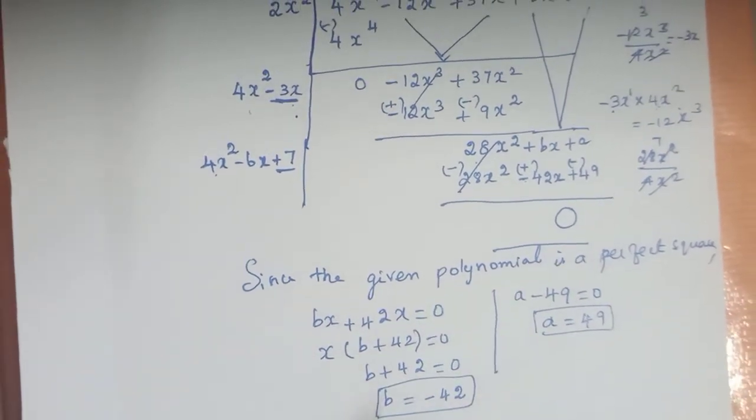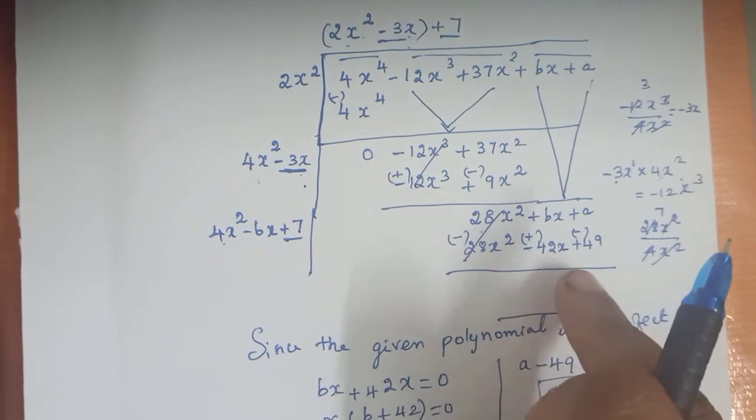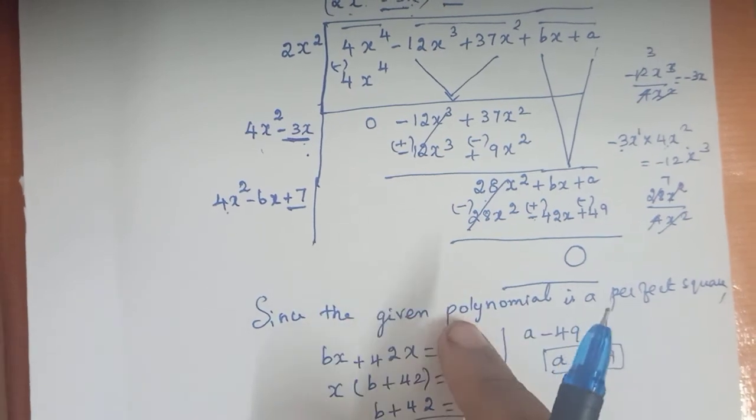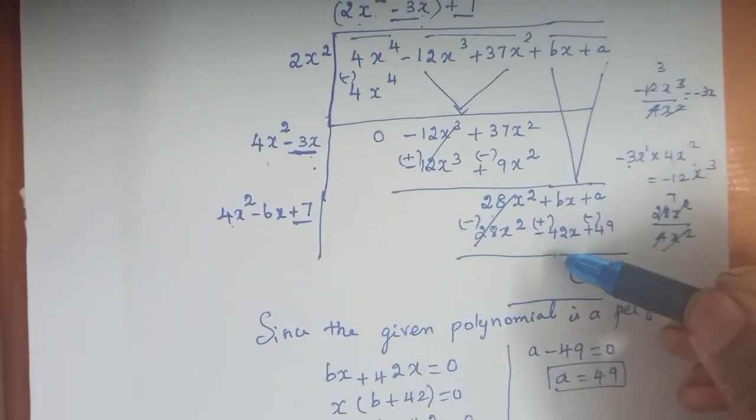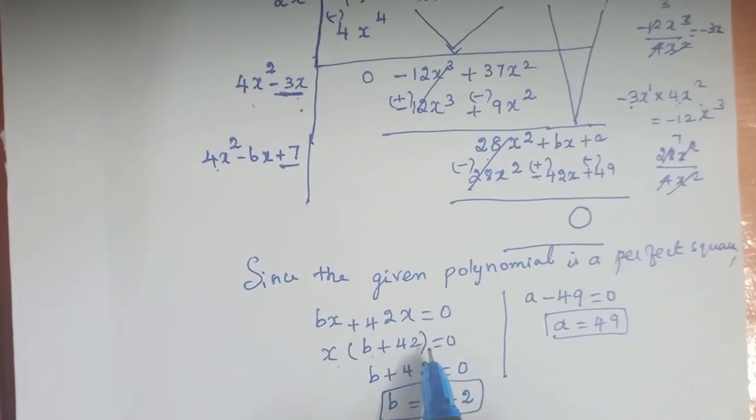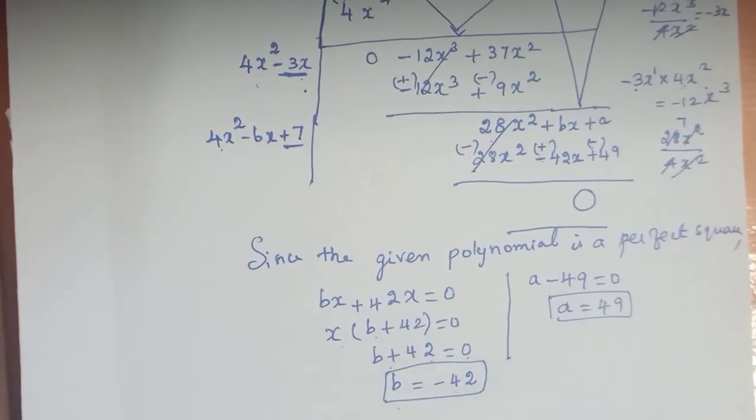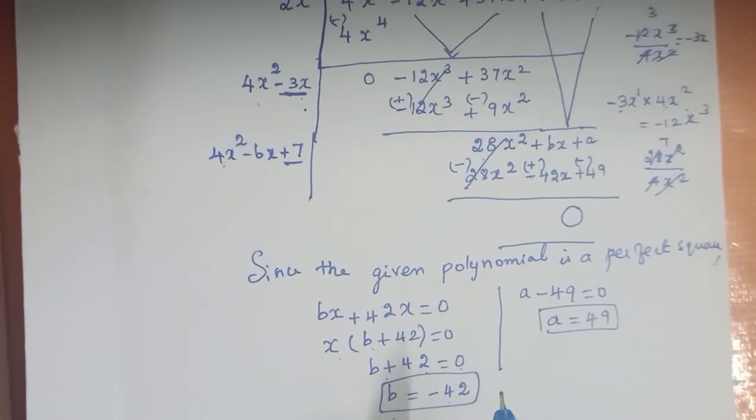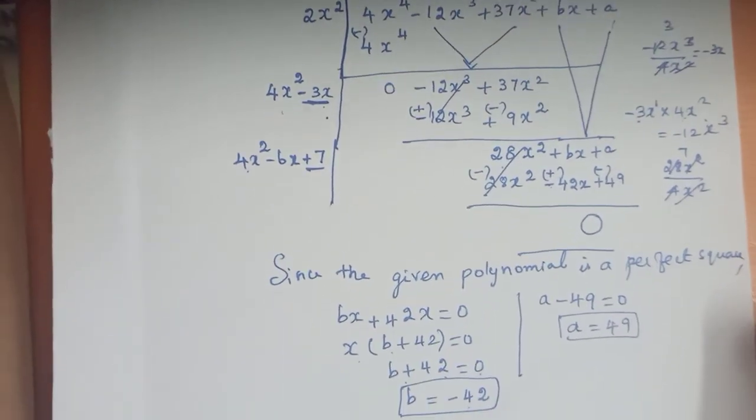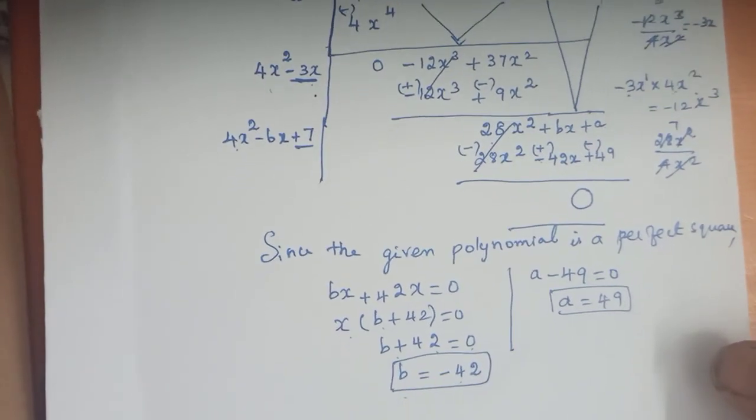These are the values of a and b. The given polynomial is a perfect square, so this step is very important. Since the given polynomial is a perfect square, the remainder cancels to zero. b equals minus 42, a equals 49 is the answer. This is a very important 5 mark question. Keep practicing. Like and subscribe my channel. Thank you students.